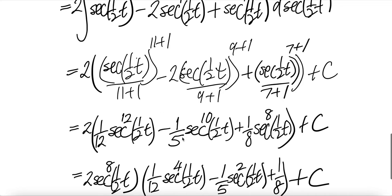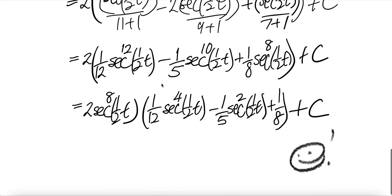Then upstairs, then downstairs, then cancel with the two, you get one over six. It's ten upstairs, ten downstairs. Then cancel with the two, you get one over five. It's eight upstairs, eight downstairs. Factor out the sec half t.